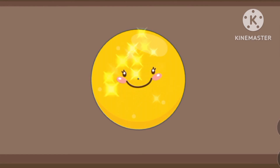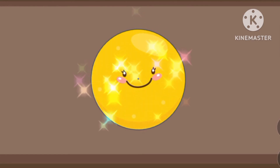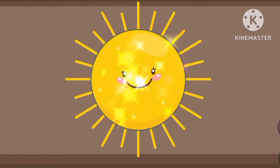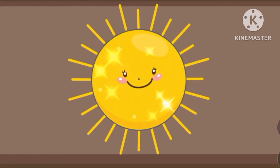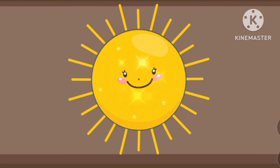A circle, a circle. What shape is a circle? The sun, the sun. The sun is a circle.